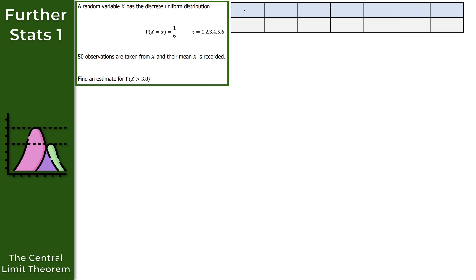Along the top row are the values that x can take: 1, 2, 3, 4, 5, and 6. Along the bottom row are the respective probabilities. The probability that our random variable x equals some value little x — as you can see, these are all equal to 1 over 6. So we have 1 over 6 for each value. Now, you don't have to draw this table, but I do find it helpful just to set up the probability distribution in this form.